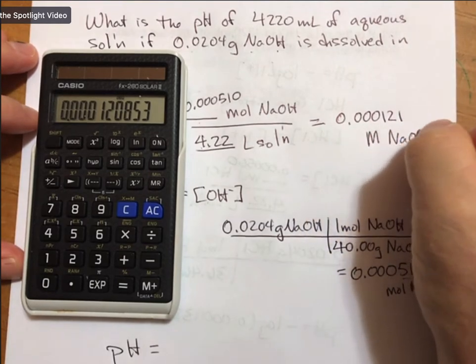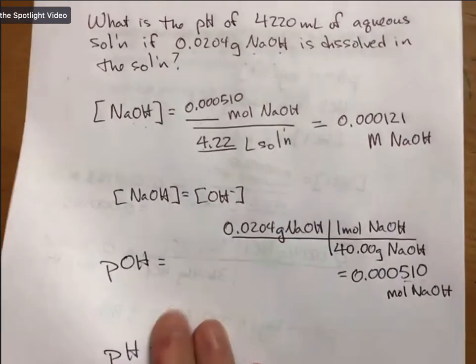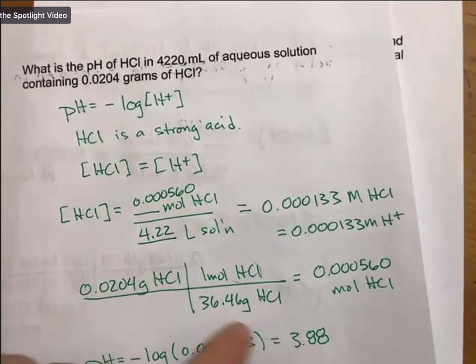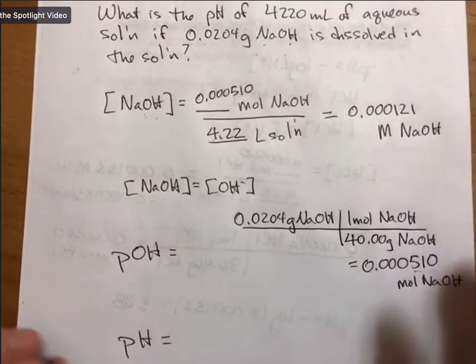Divided by 4.22 gives us 0.000121 molarity of sodium hydroxide. Let's see, my molarity compared to the last one is pretty close, but because the molar mass is a little different, we get slightly different molarity.